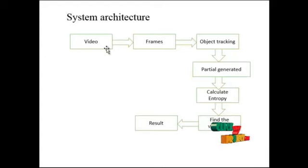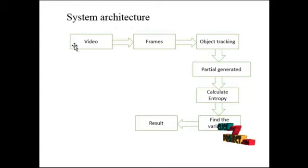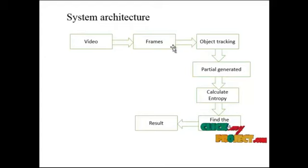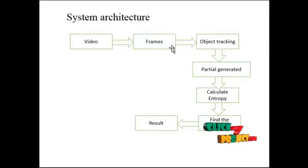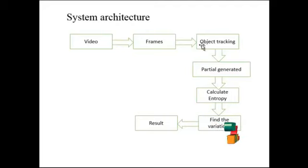Now we take the video as input. Then the video will be converted to frames. Then the frames will be pre-processed by the Gaussian filter. After pre-processing, we subtract the background for identifying the foreground.